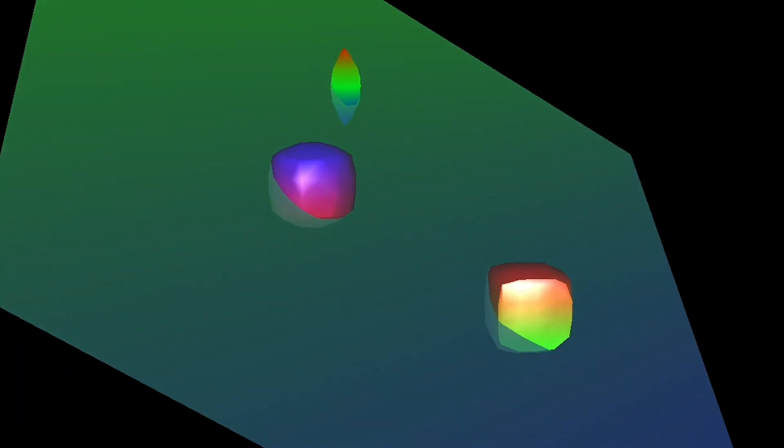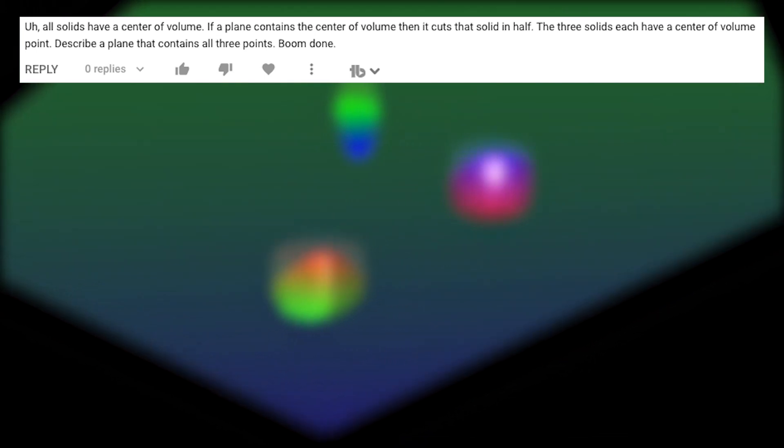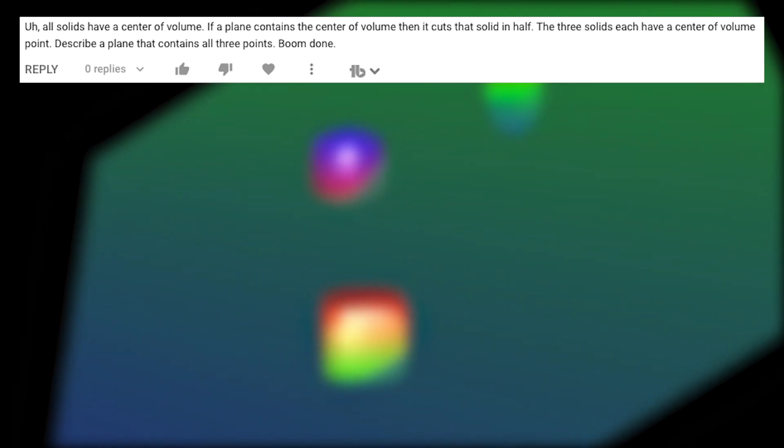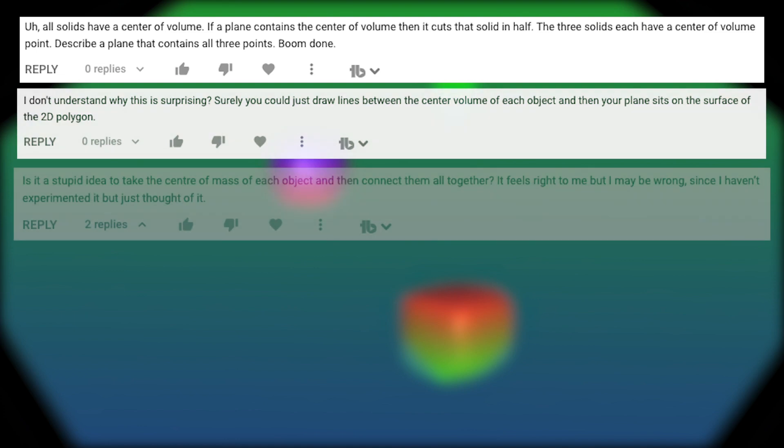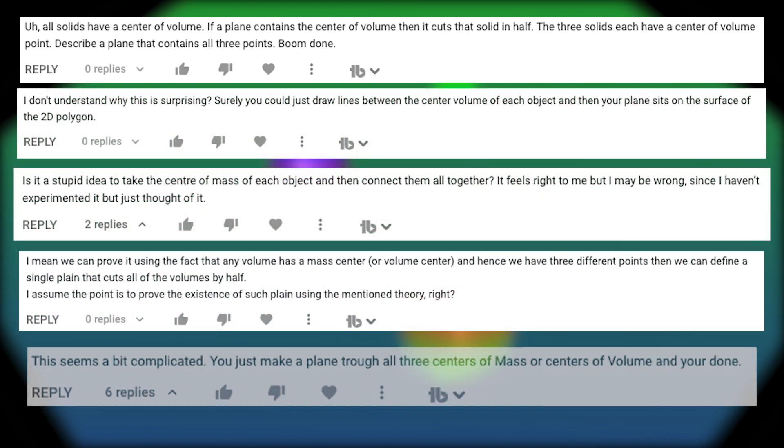Alright, in the last video, we proved that for any three objects just floating in space, no matter what they look like or where they are, there always exists a plane that simultaneously cuts them all in half. And we had a lot of fun, a lot of laughs, not really, but I got so many comments all saying something along the lines of, this is easy because every object has a center of mass or centroid or center of volume. Everyone used one of those terms, where any plane through that point cuts the object in half. It takes three points to define a plane, then you just need that point for each object and boom, you have a plane that cuts them all in half.